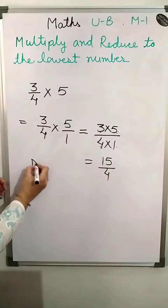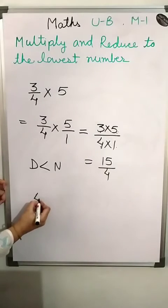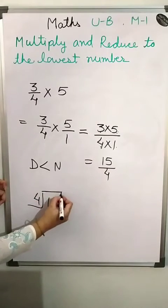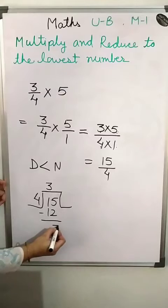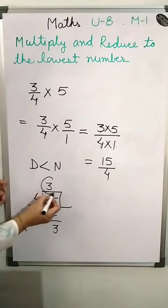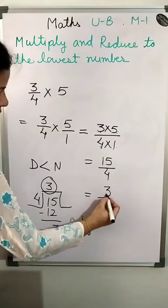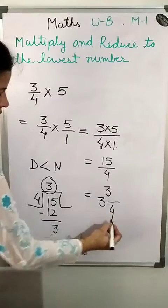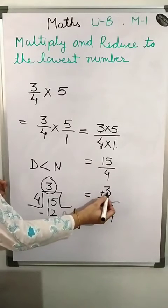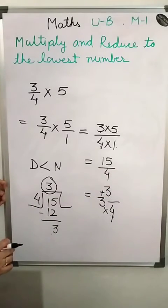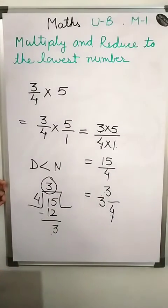Now the denominator is smaller than the numerator, so we divide. 4 goes into 15: 4 threes are 12, remainder is 3. We write 3 in the middle, the remainder 3 goes over the denominator 4. You can check: 3 times 4 is 12, and 12 plus 3 is 15. So in this way you convert to a mixed fraction. The answer is 3 and 3/4.